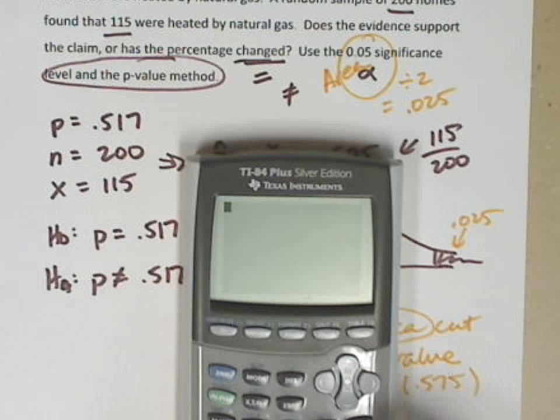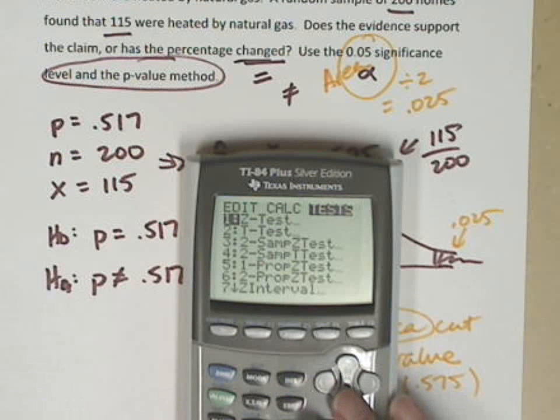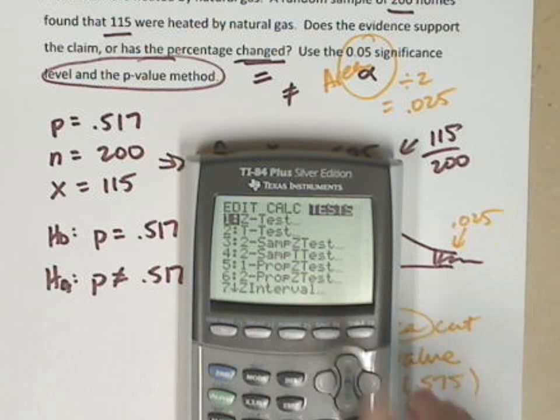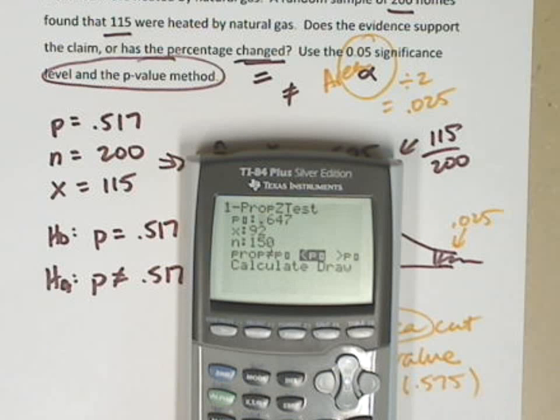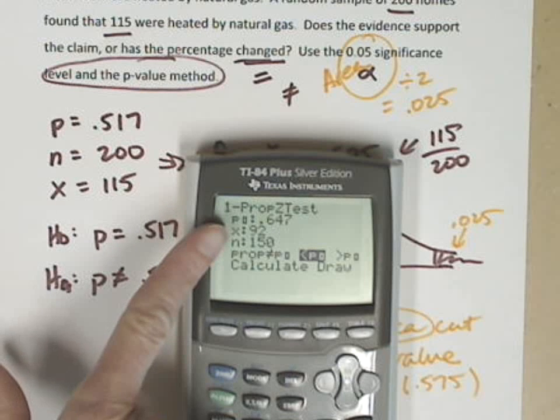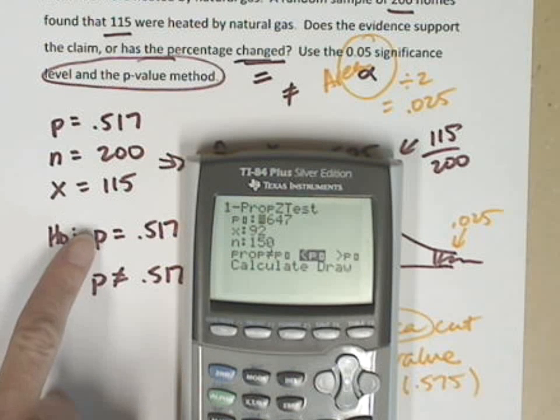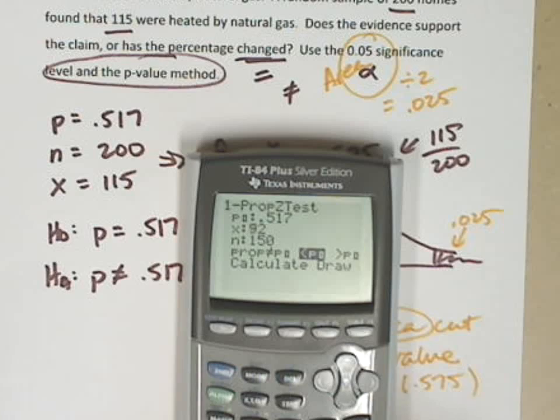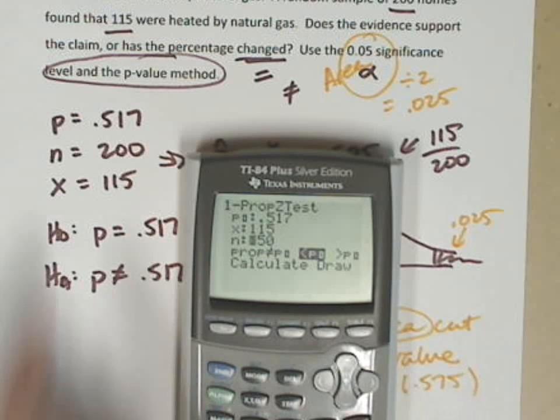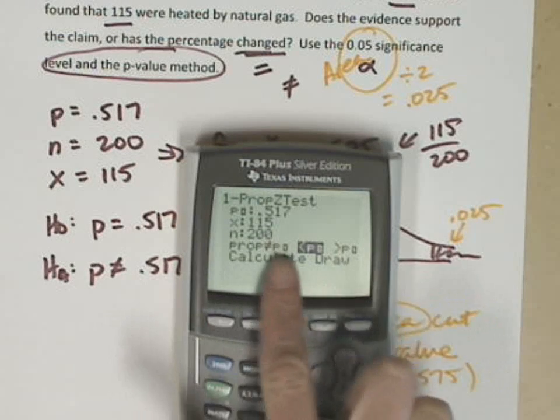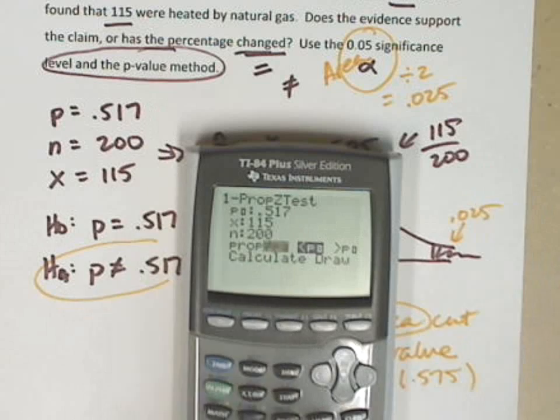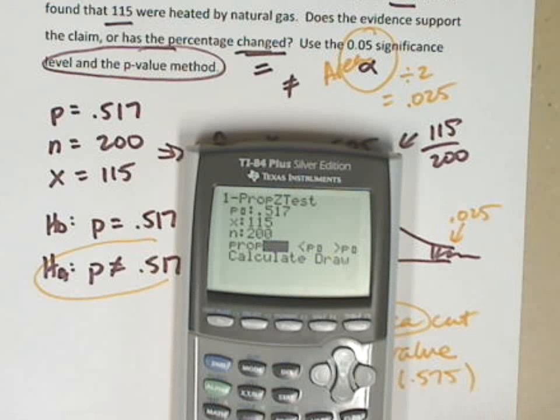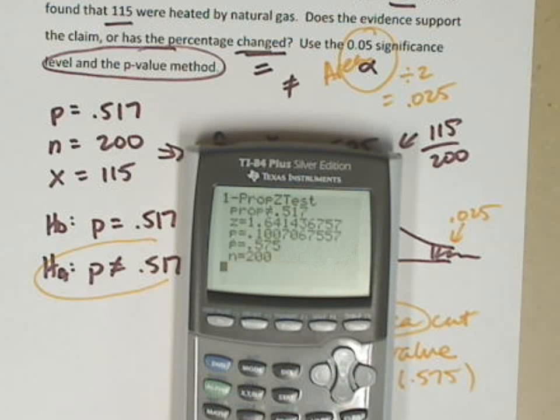Let's let the calculator do as much work as it can. I'm going to go to the stat menu and choose tests. We are doing a one sample proportion test, so I go down to number 5. This p-sub-0 is the percentage from my hypothesis, which is .517. X is 115, N was 200. The proportion is asking me for the alternative hypothesis, which is not equals. I'm going to ask it to calculate.